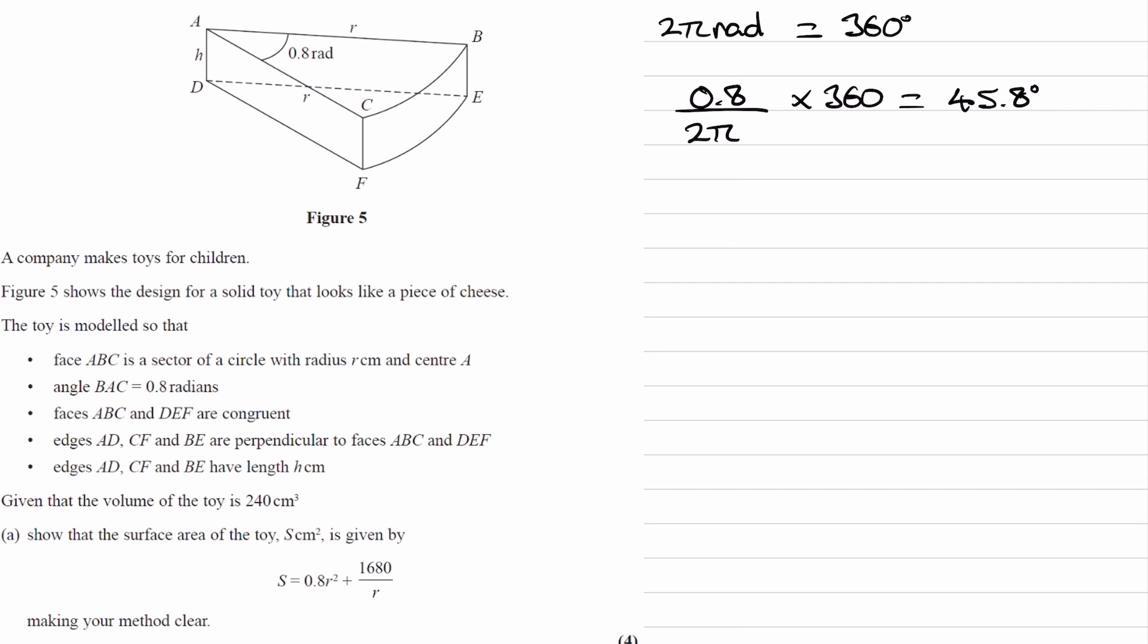So the general equation to convert between degrees and radians is your angle in radians divided by 2π equals your angle in degrees divided by 360.